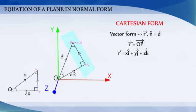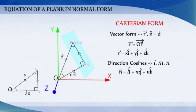And let l, m, n be the direction cosines of unit vector n. Then, n cap is equal to l i cap plus m j cap plus n k cap.